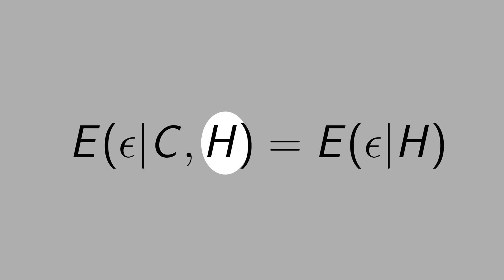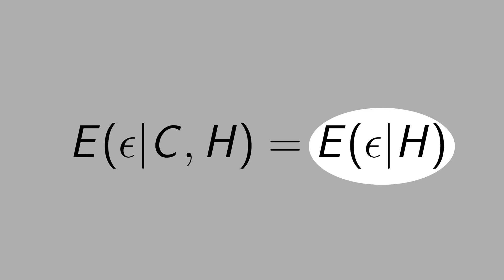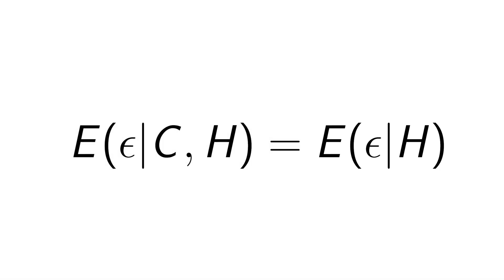If you condition on a variable h, then college is independent from the error term. At least, this is what is written mathematically. See that there is no college here? If these two terms are equal and they can discard c, that means that c is independent of the error term.